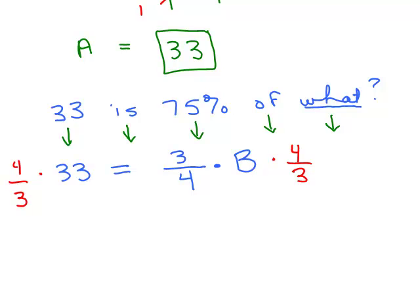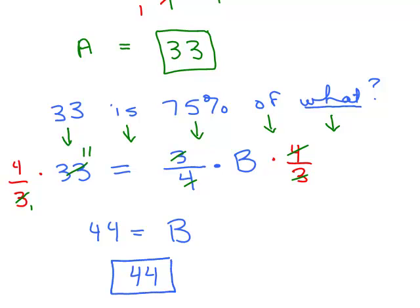We're ready to go here. What cancels? The 4 is going to cancel with that 4, the 3 with that 3. On the right-hand side, I'm just going to have 1B, which will be B, which is what I'm looking for. On the other side of the equation, 3 goes into 33 11 times, so I'll have 4 times 11, 44 over 1, which is 44. Of course, we knew the answer was going to be 44. We don't want to write our answer as B equals 44, we just want to write the number as 44 or put a box around 44.